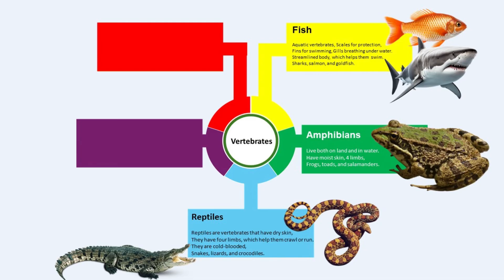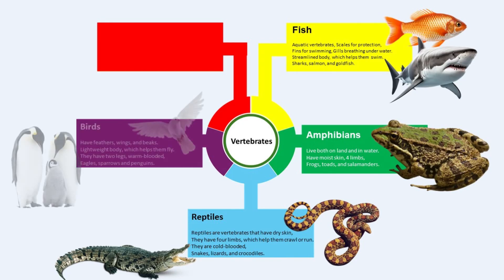Some animals have tiny heaters inside them. Humans, cats and birds have internal heaters that always stay warm, keeping body temperature up when it's cold outside. Such animals are called warm-blooded animals. Some examples of reptiles are snakes, lizards and crocodiles.